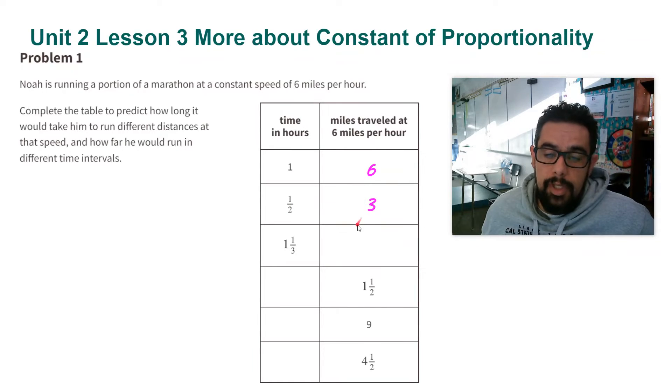miles. So half of 6 is 3. The other one here, one and a third hours traveled at 6 miles per hour, that would be 8. Right, one is 6 plus a third of 6 is 2. That gives me a total of 8.